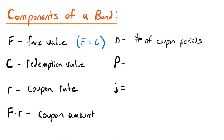Capital P represents the price of the bond — how much you would have to pay to borrow a certain amount for a particular period of time. The price P equals the present value of the series of coupons paid throughout the term, plus the redemption value paid at the end of the term. That present value is based on a rate of return called the yield rate, lowercase j. In the real world, the yield rate is determined by conditions of the current financial market.